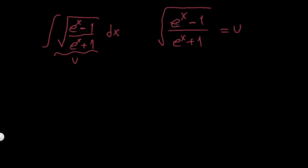I'm going to need to differentiate this and then I'll have a lot of x terms that I'll also need to convert into u terms. So instead, I can try to separate this x before differentiating. My task is to just separate x from the left side.